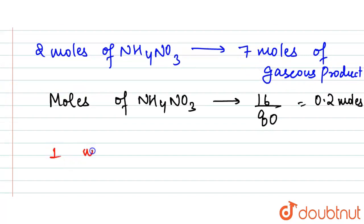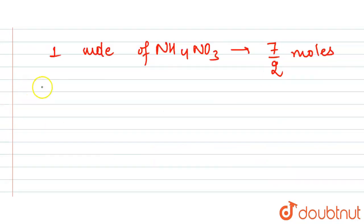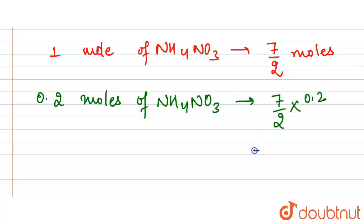1 mole of NH4NO3 will give us 7 upon 2 moles. And if we have 0.2 moles, then 0.2 moles of NH4NO3 will give us 7 by 2 into 0.2, so we have 0.7 moles.